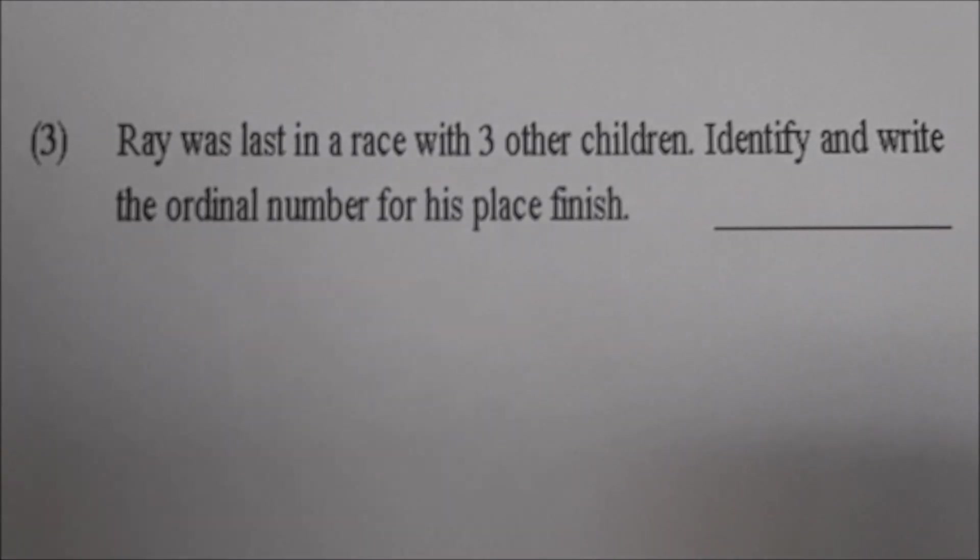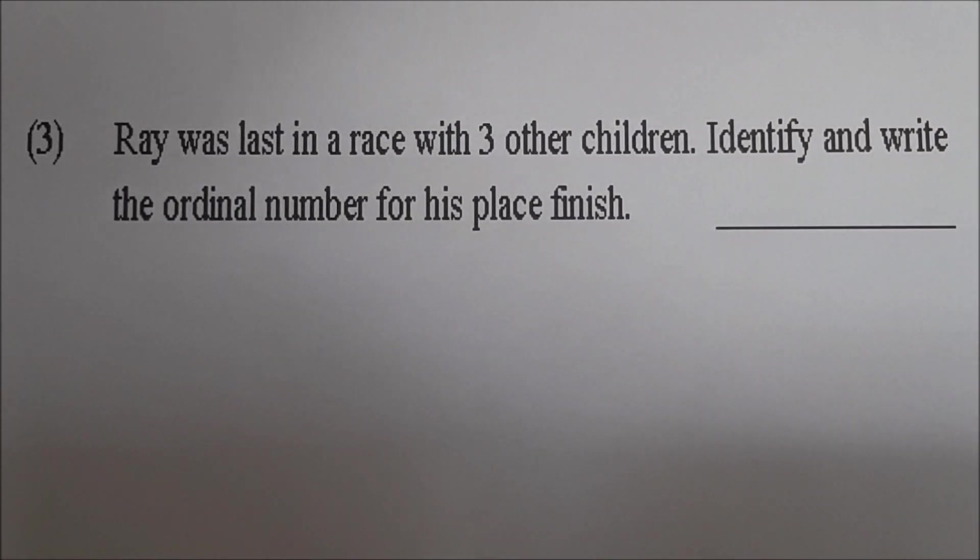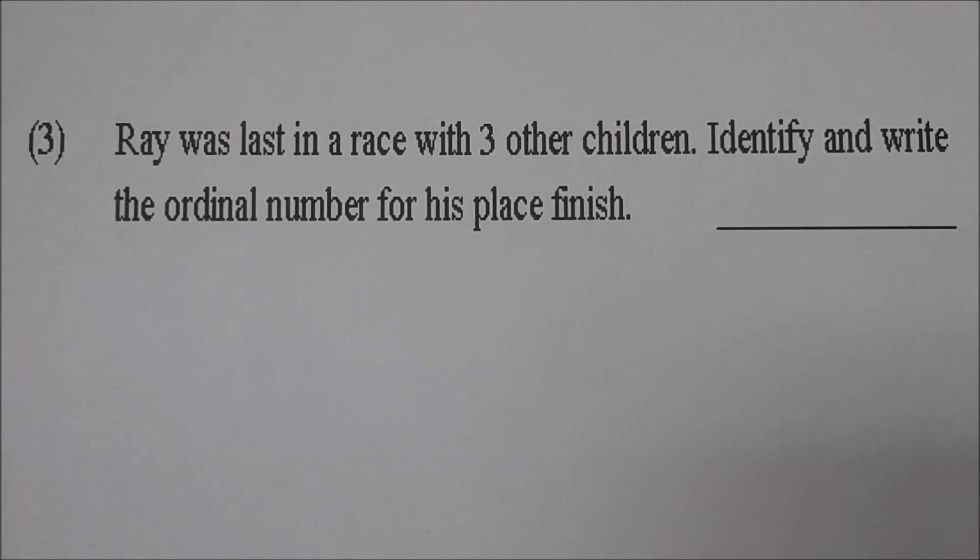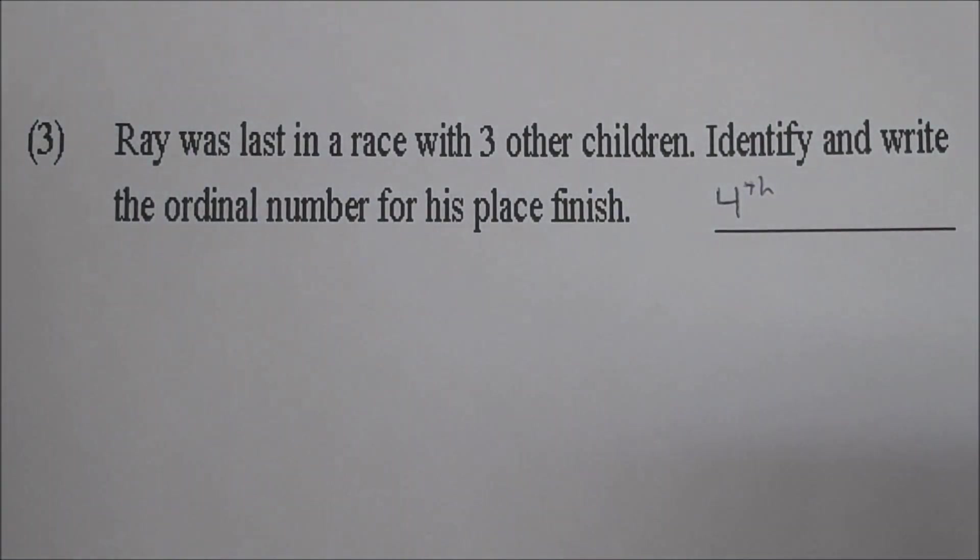Number three. Go ahead read it Sky. Ray was last in a race with three other children. Identify and write the ordinal number for his place finish. Very good. Okay Sky. How many children were in the race? Four. Okay because it's Ray and three others so it's four. So write the ordinal number for me Sky if you came last. Okay let's check it out. Fourth. Very good.